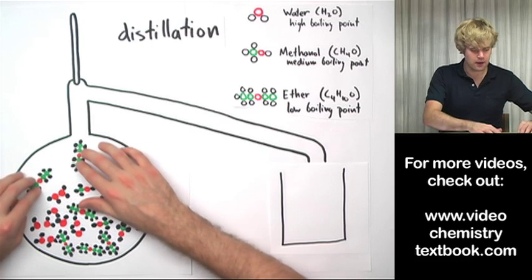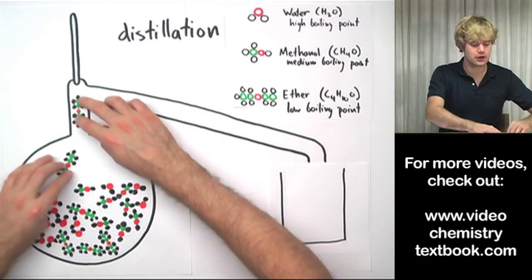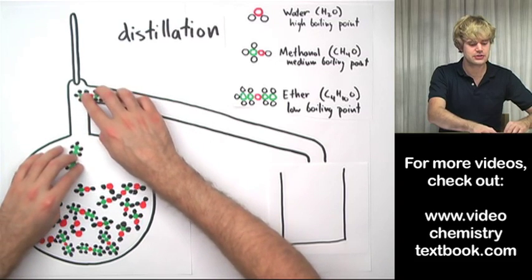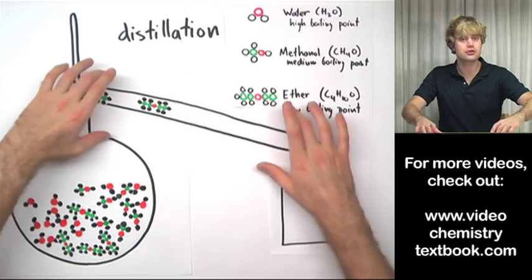These ether molecules are going to come out of the liquid phase. They're going to be gas, and so they're going to move up here into the top of the flask. As gas, they're going to enter this condenser. This condenser is cool, remember.